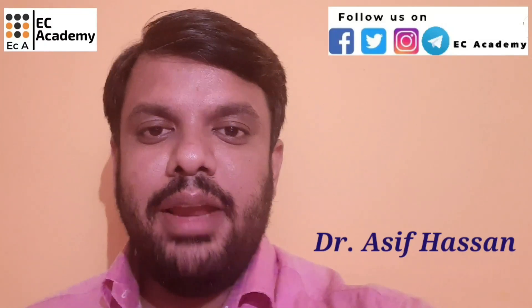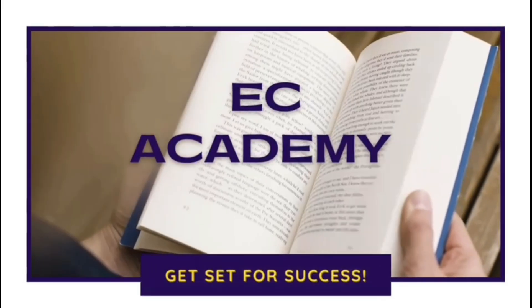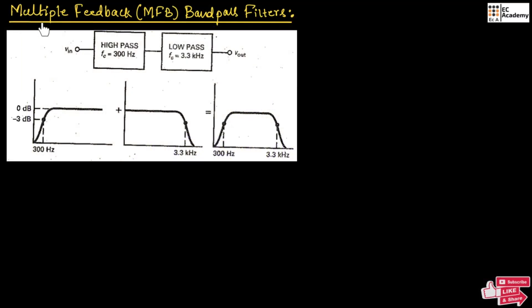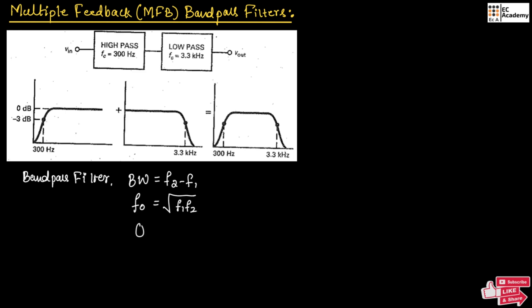Hello friends, welcome to ESEA Academy. In this lecture, let us understand multiple feedback band pass filter. From our previous discussion, we know that the band pass filter has a bandwidth of f2 minus f1 and center frequency as the square root of f1 into f2. The quality factor can be given as f0 divided by bandwidth.